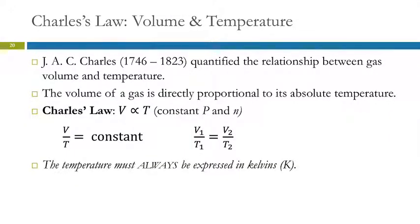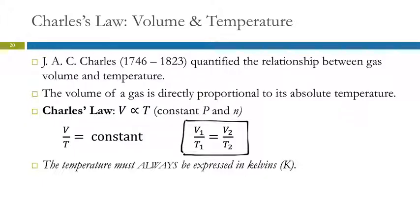Now let's look at Charles' Law. Charles, working in the 1700s and 1800s, examined the relationship between gas volume and gas temperature. He found that the volume of a gas is directly proportional to its absolute temperature — double the temperature, double the volume. So V/T equals a constant, expressed most commonly as V₁/T₁ = V₂/T₂. Very important: when doing gas law calculations involving temperature, the temperature must always be in Kelvins. You cannot use degrees Celsius or Fahrenheit.